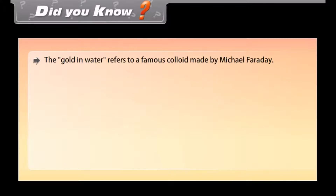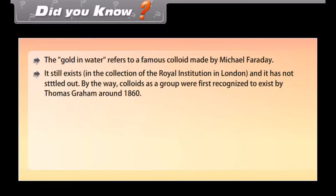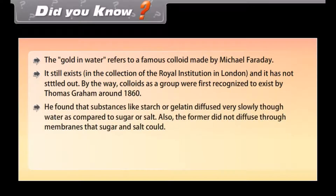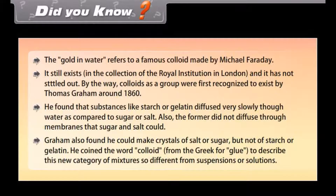Did you know? 'Golden water' refers to a famous colloid made by Michael Faraday. It still exists in the collection of the Royal Institution in London and has not settled out. Colloids as a group were first recognized by Thomas Graham around 1860. He found that substances like starch or gelatin diffused very slowly in water compared to sugar or salt, and did not diffuse through membranes that sugar and salt could. Graham coined the word 'colloid' from the Greek for 'glue' to describe this new category of mixtures.